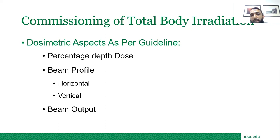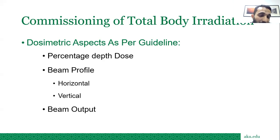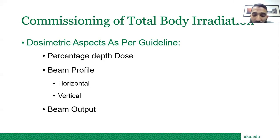For the dosimetric aspect per guideline, we need three types of beam data to commission TBI: percentage depth dose (PDD), which shows how dose changes as the beam penetrates the patient; beam profile, showing how the beam shape changes at extended SSD; and beam output at the extended SSD. We measured both horizontal and vertical profiles, and beam output at extended SSD.